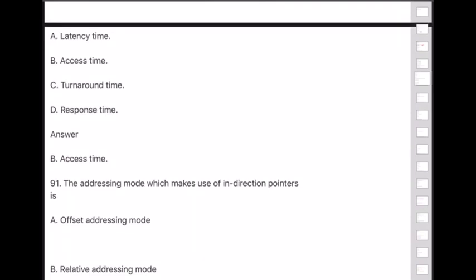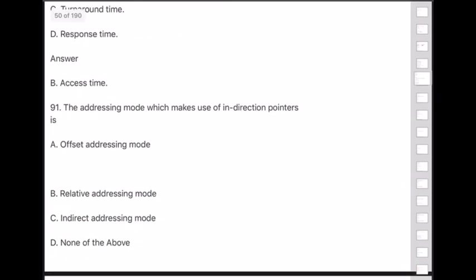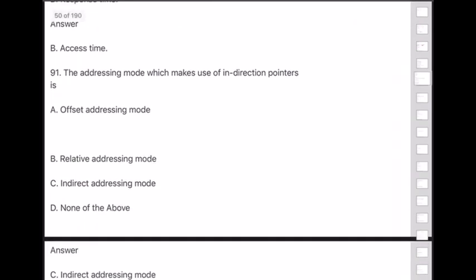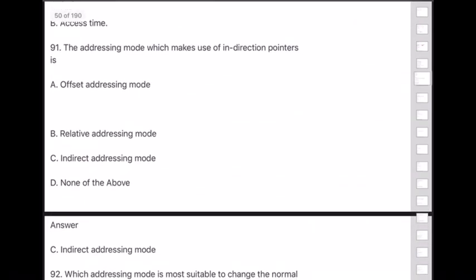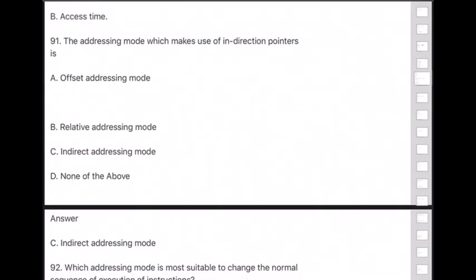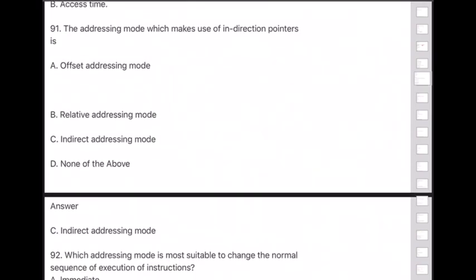Question 91: The addressing mode which makes use of indirection pointers is — answer is option C — indirect addressing mode.